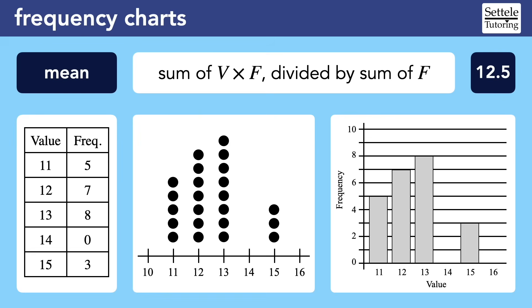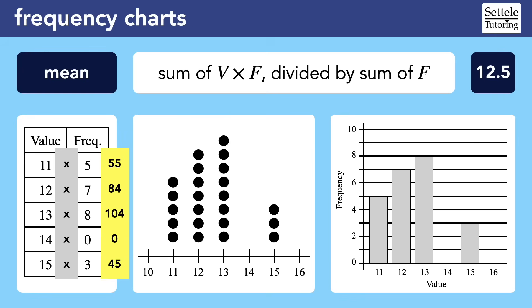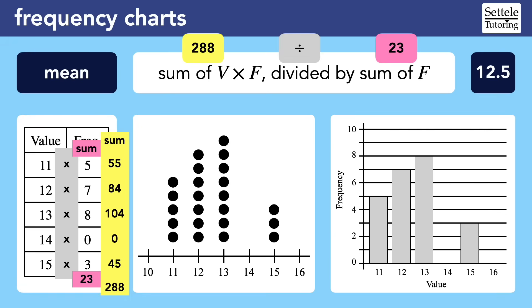Finding the mean is more complicated. The mean is the average, found by summing all numbers and dividing by the total count. When we have a frequency chart, we first multiply the value and frequency for each row. The first row tells us 11 appeared 5 times, so 11 times 5 equals 55 — that's a shortcut for adding 11 five times. We find the overall sum by adding each of these products, giving us 288. Then we add the frequencies to find the total number of data points, which is 23. Dividing 288 by 23 gives a mean of approximately 12.5.